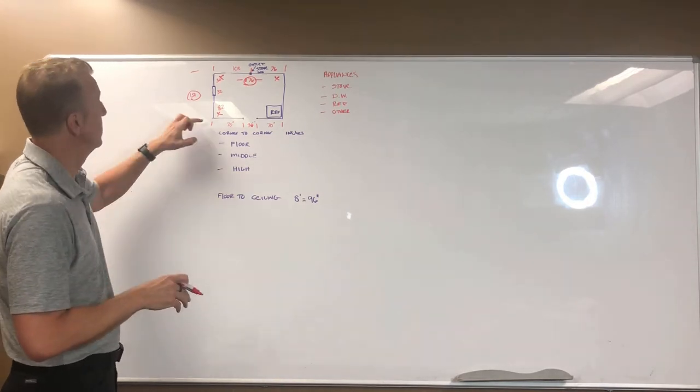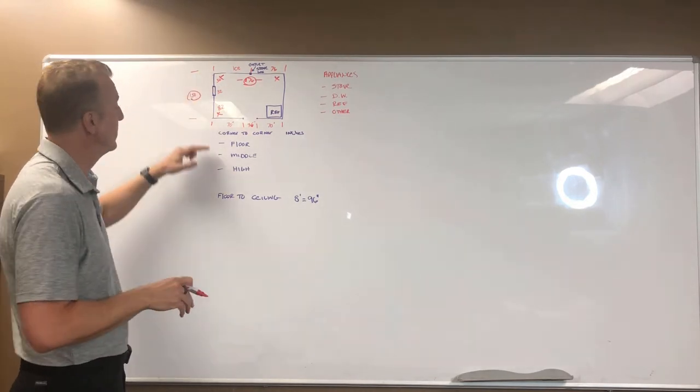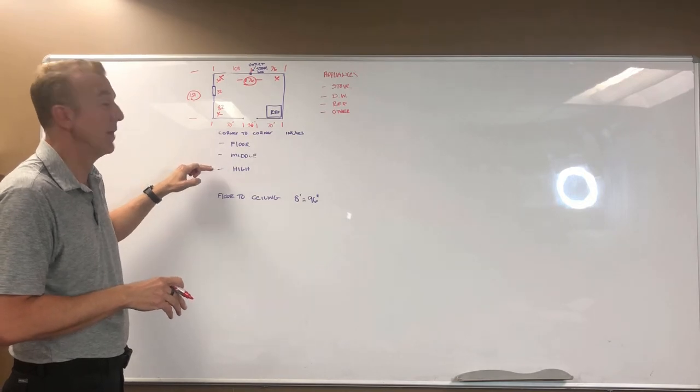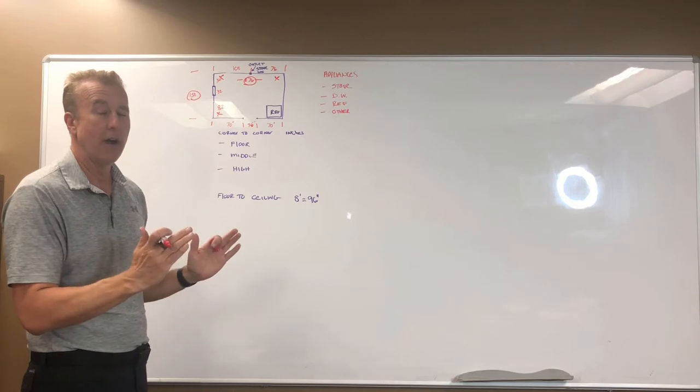The only other thing I would check is when you're doing these initial corner to corner measurements, you might check at the floor level, you might check halfway up the wall, and then you might check near the top of the wall to just see if the walls are square and plumb.